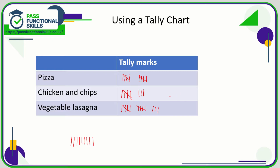It makes it much easier to add up at the end. For pizza we've got two bunches of fives — that's five plus five, which is ten. Chicken: five, six, seven, eight. And vegetable lasagna: five, ten, eleven, twelve, thirteen.